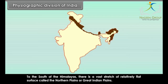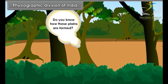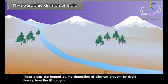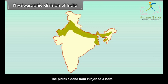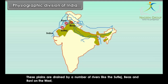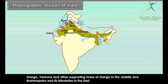To the south of the Himalayas, there is a vast stretch of relatively flat surface called the Northern Plains or Great Indian Plains, formed by the deposition of alluvium brought by rivers flowing from the Himalayas. The plains extend from Punjab to Assam and are drained by rivers like the Sutlej, Beas and Ravi on the west, Ganga, Yamuna and supporting rivers in the middle, and Brahmaputra and its tributaries in the east.